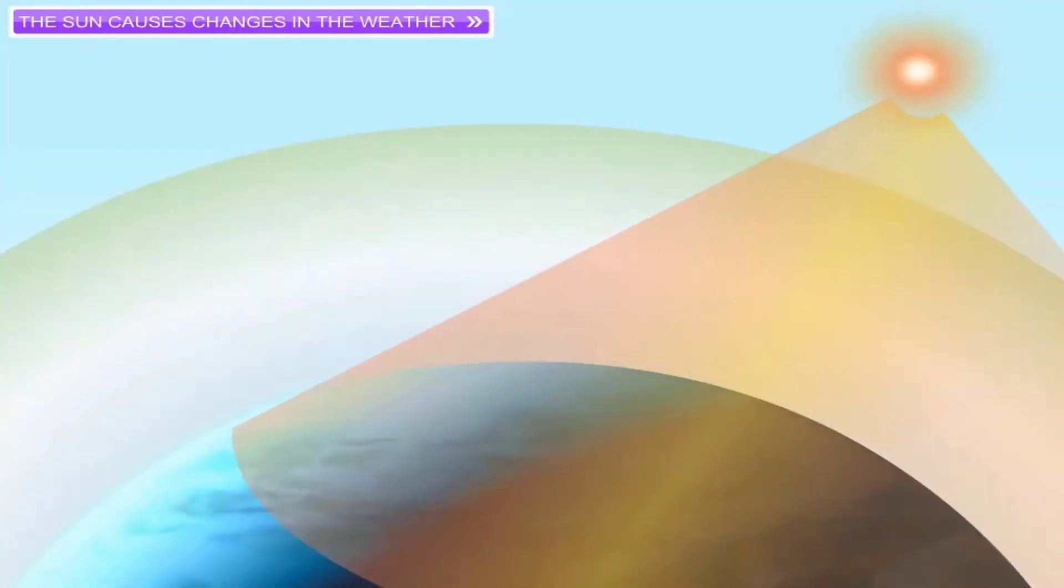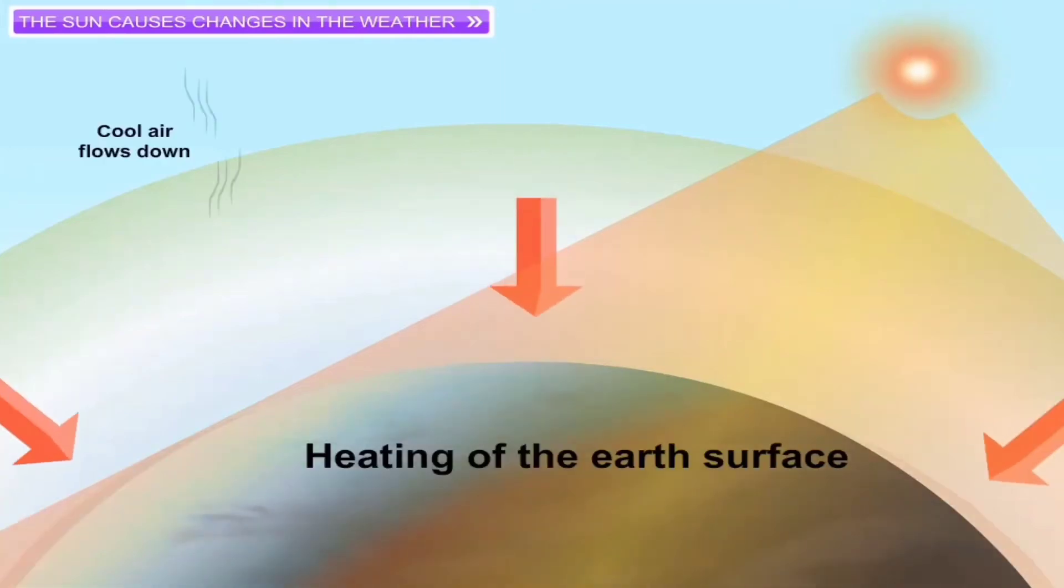The hot surface of the earth heats the air near it. This hot air, being lighter in weight, rises up and creating an area of low pressure.